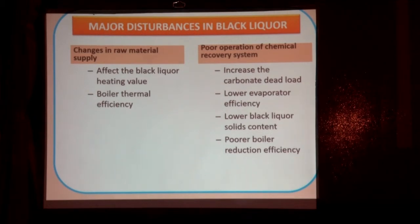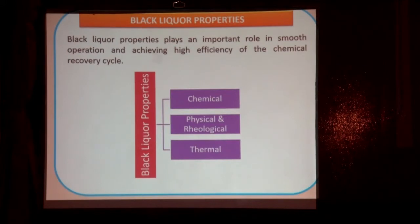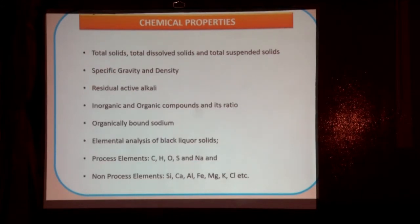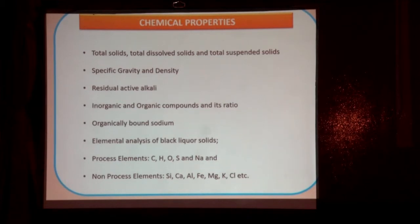My request to all from the chemical recovery area: when there is some change in pulping, or when examining new cooking chemicals or aids — any changes — as you go with the change in pulping properties, simultaneously check the black liquor properties. Now coming to the topic of black liquor properties: they have an important role in smooth operation because this is the only raw material for chemical recovery.